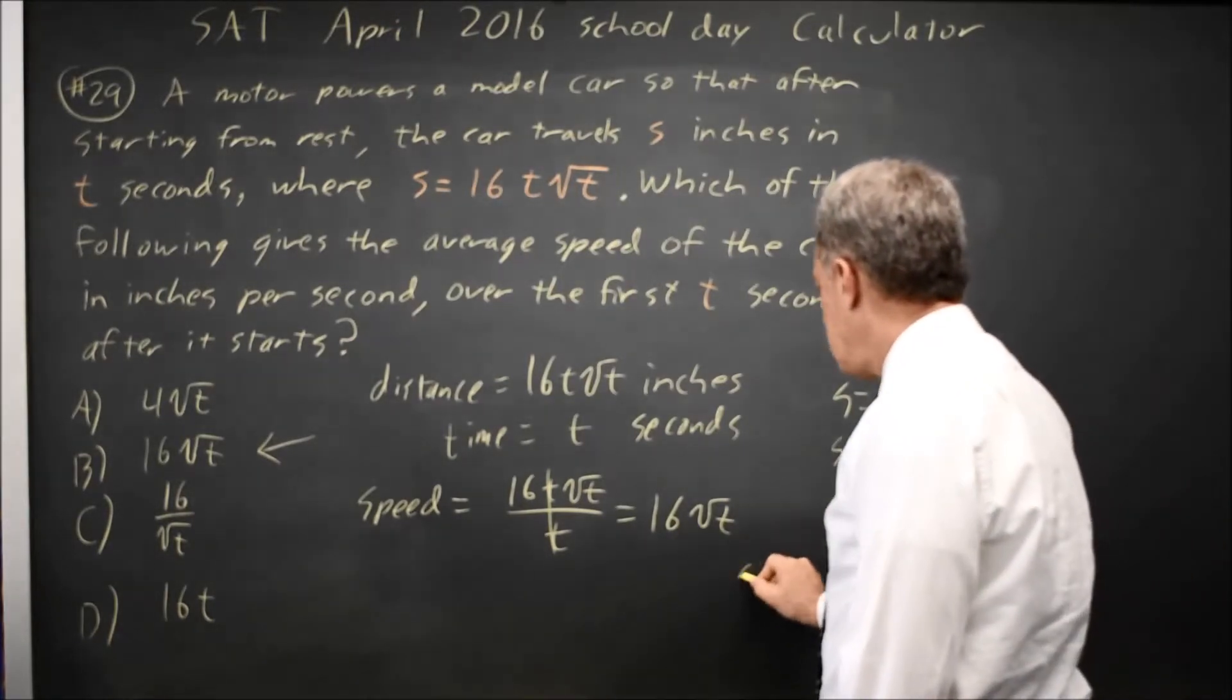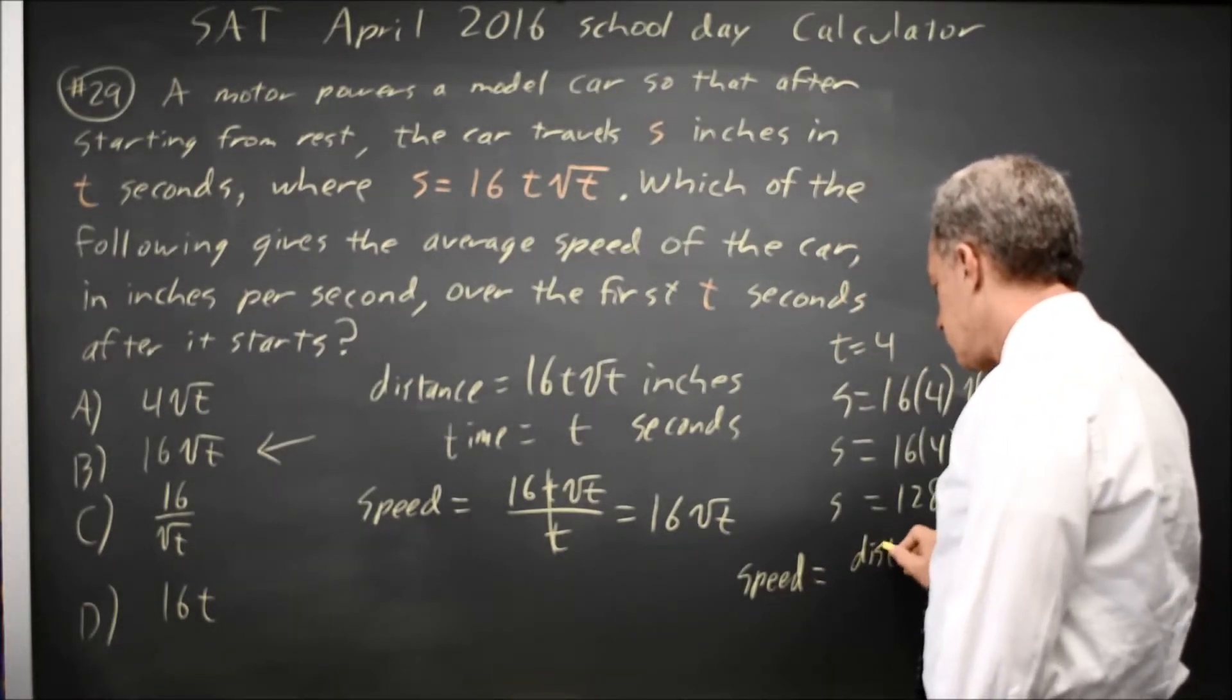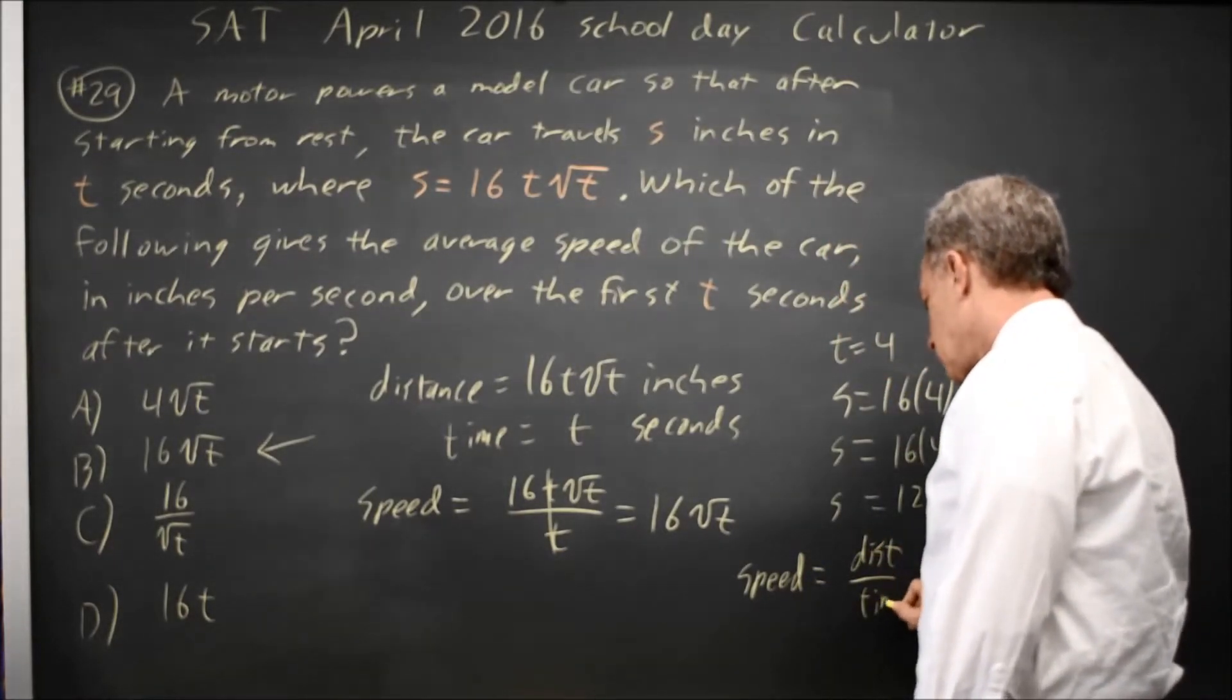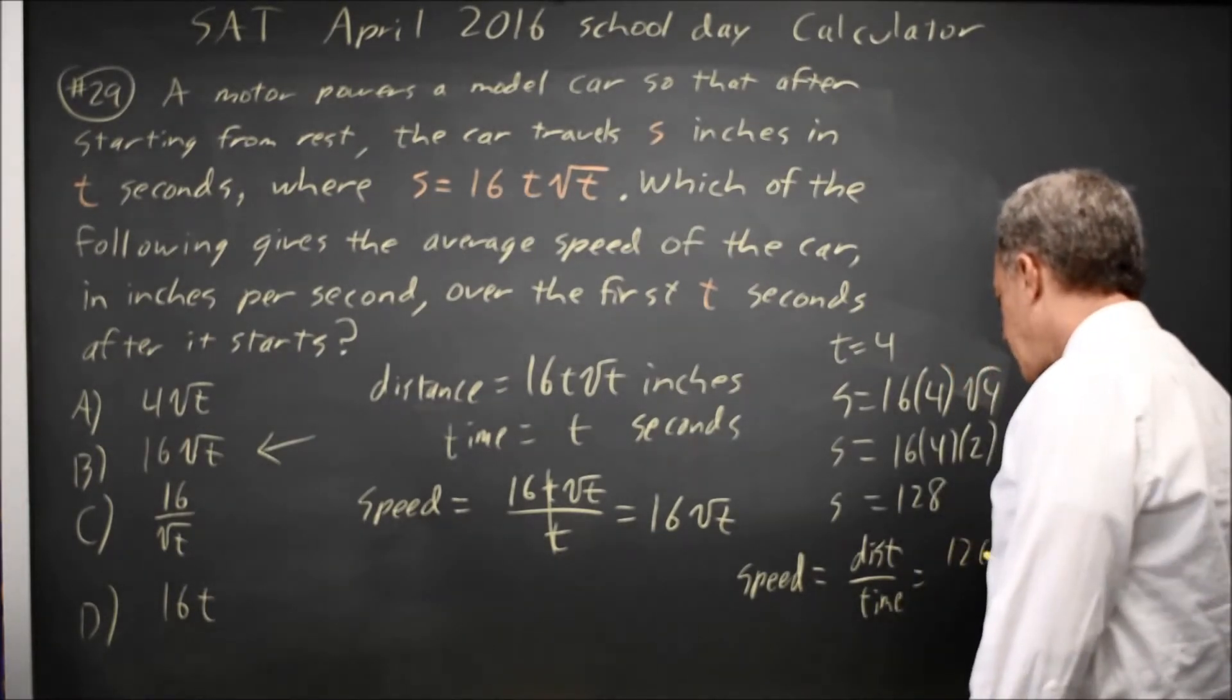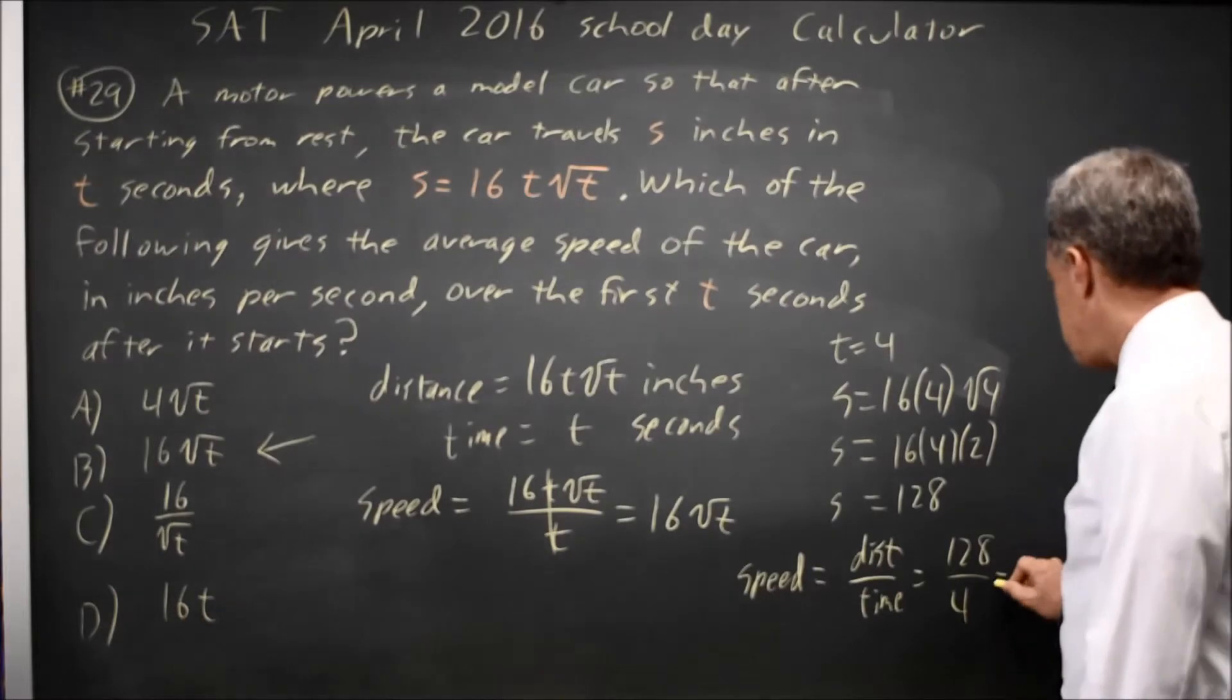And speed equals distance over time, which is 128, your distance, over 4, your time, which is 32.